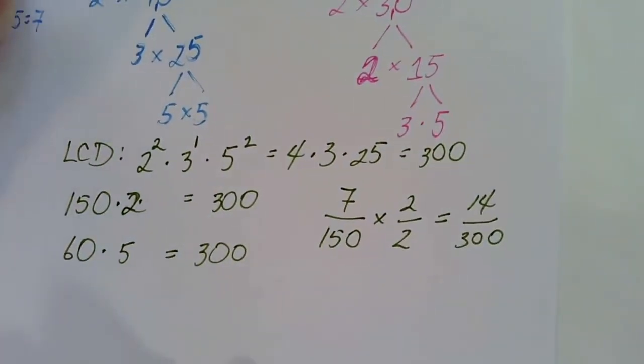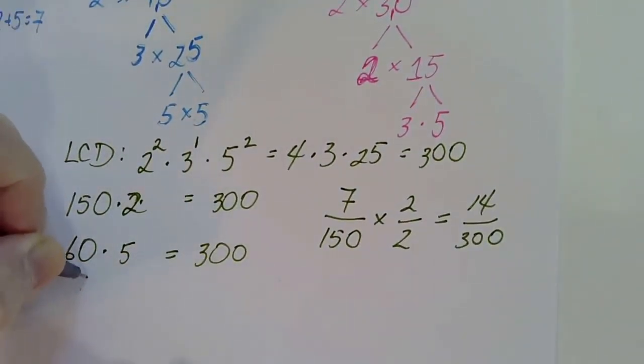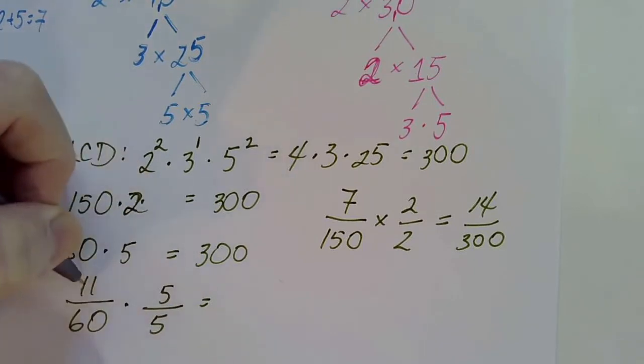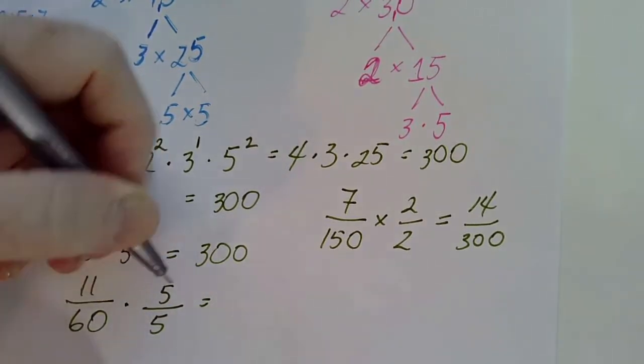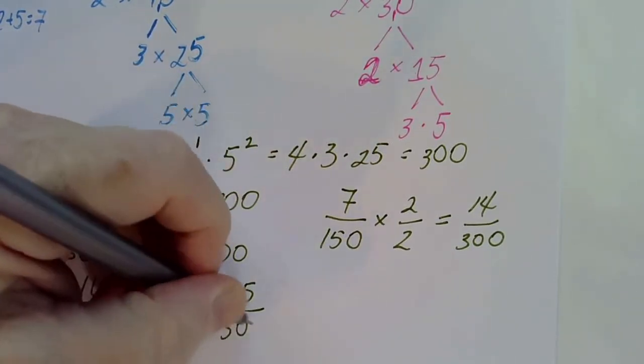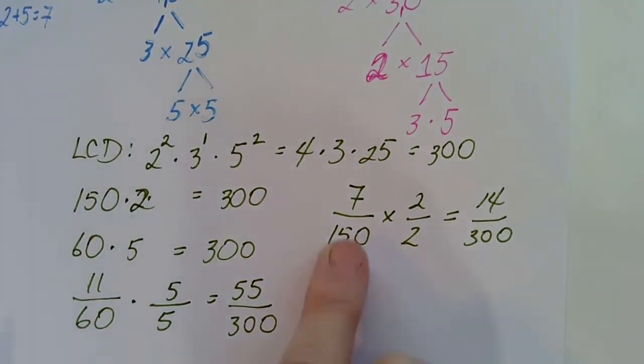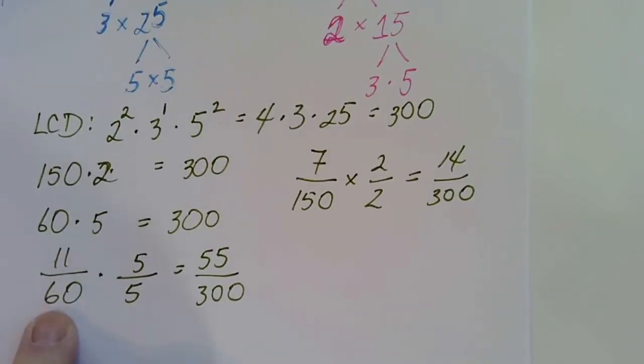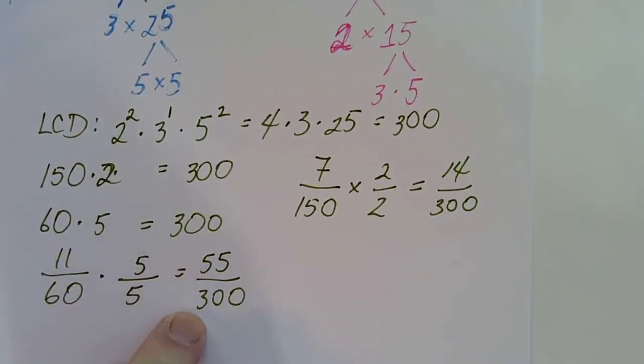And then the second fraction was eleven over sixty. I know that sixty times five is three hundred. But if I do something to the denominator, I have to do it to the numerator. Eleven times five is fifty-five. Sixty times five is three hundred. So we have our two equivalent fractions. Seven over one fifty is equivalent to fourteen over three hundred. And eleven over sixty is equivalent to fifty-five over three hundred.